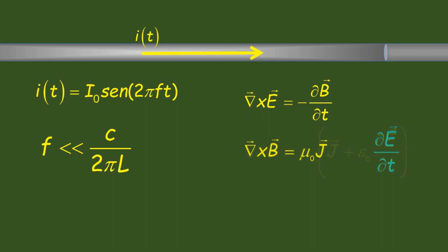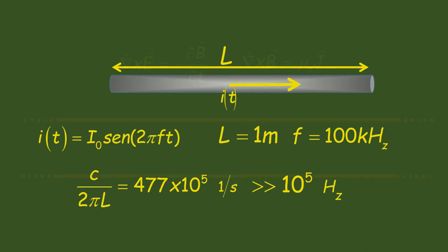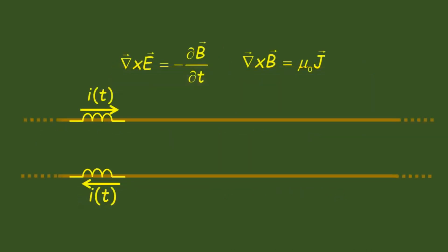For example, for a 1 meter long circuit with a 100 kilohertz signal, the simplification can be done since C over 2 pi L is 477 times the maximum frequency. In the transmission line equivalent circuit,